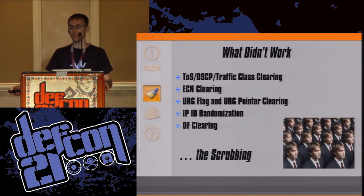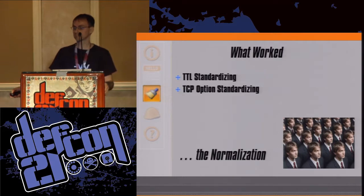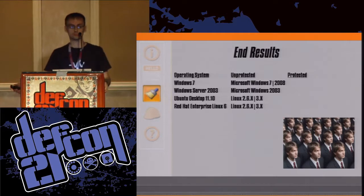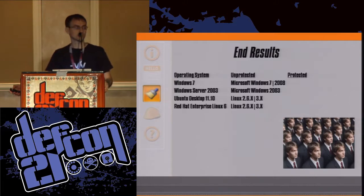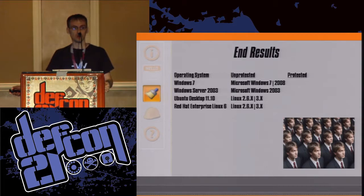What worked in synergy with the IP ID randomization? The time-to-live standardizing and the TCP option standardizing — the normalization. I can talk about this all day, but it's better to just show you the results. Unprotected: a Windows 7 target looks like a Windows 7 host; a Windows Server 2003 target looks like a Windows 2003 host; an Ubuntu desktop looks like a Linux host running the 2.6.x or 3.x kernel; and a Red Hat Enterprise target also identified as Linux 2.6.x or 3.x kernel.